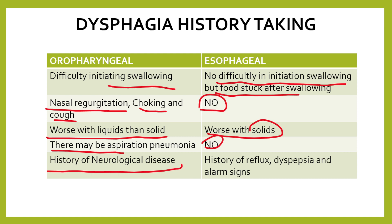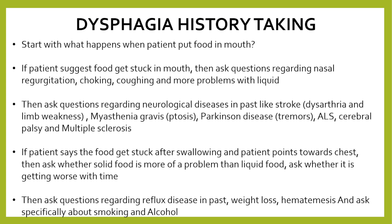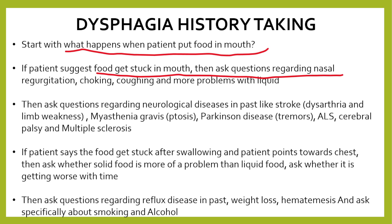In oropharyngeal dysphagia, mostly a neurological disease history will be present, while in esophageal dysphagia there will be history of reflux, dyspepsia, and alarm signs like anemia and hematemesis. When we start the history, we ask the patient what happens when food is placed in the mouth. If symptoms suggest food gets stuck in the mouth, ask questions regarding nasal regurgitation, choking, coughing, and problems with liquid diet.